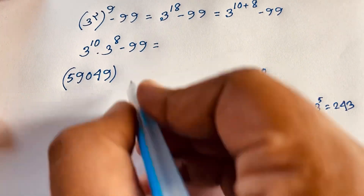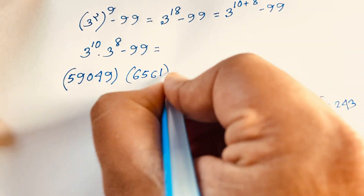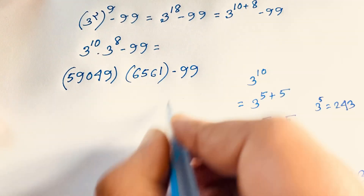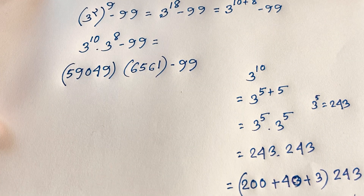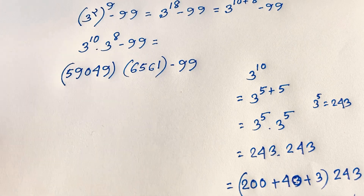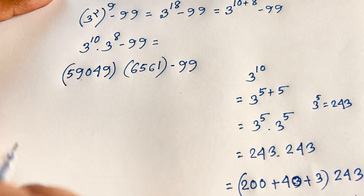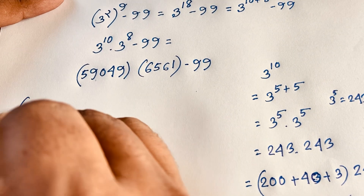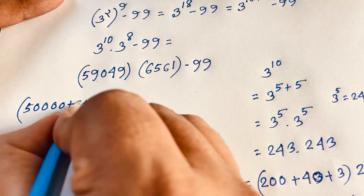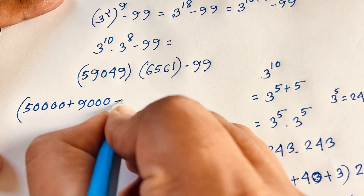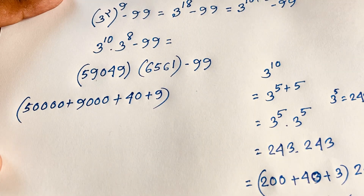So now our expression is 3 to the power 10 times 3 to the power 8 minus 99, which is 59049 times 6561 minus 99. Let me solve this without a calculator. I can write 59049 as 50000 plus 9000 plus 40 plus 9.